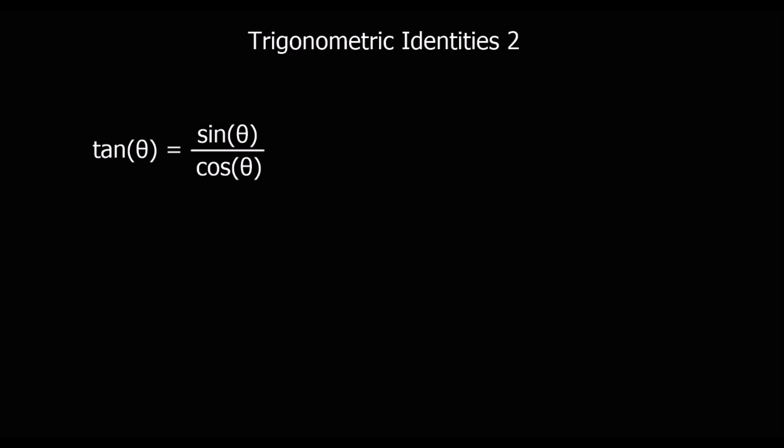In this video we're going to look at more trigonometric identities. We're going to start with the identity that we should already know from a previous video: tan θ equals sin θ over cos θ.